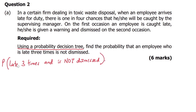Take note that if someone comes late three times and is not dismissed, it simply means they've not been caught. The question says there is one out of four chances that he or she will be caught. It means that when you arrive late, you could be caught and there is also a possibility of not being caught. The dismissal only happens if you're caught, so you can come late as many times as possible - as long as you are not caught, you will not be dismissed.